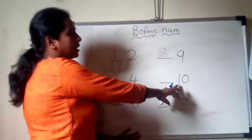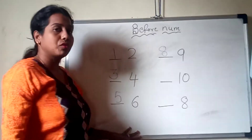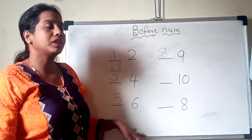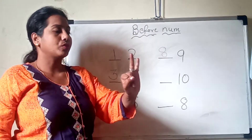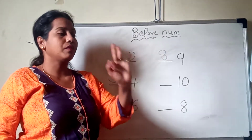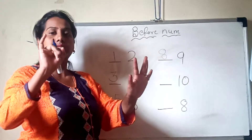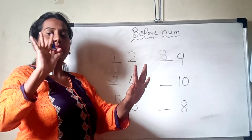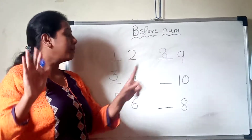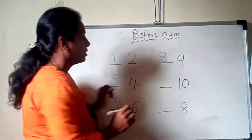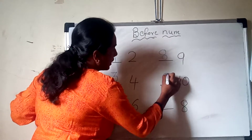Now next, here 10 — which number will come before? Count the number: 1, 2, 3, 4, 5, 6, 7, 8, 9. Which number will come? 9. So here we are going to write 9. Very good.